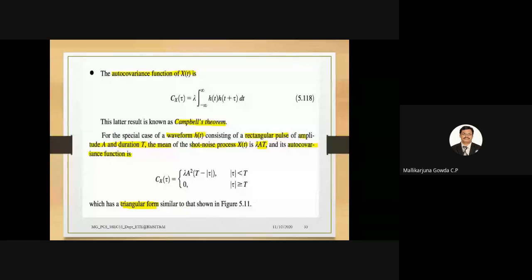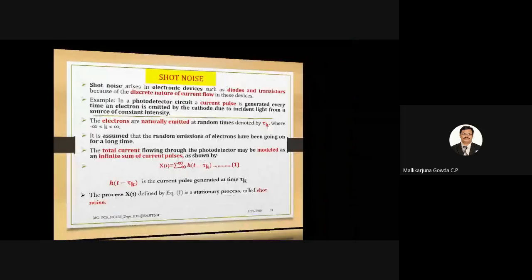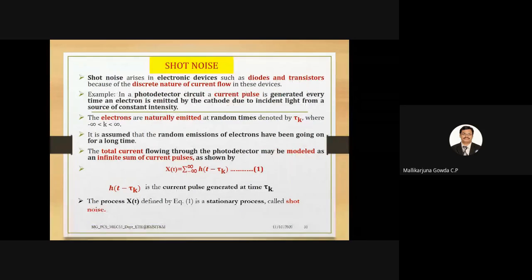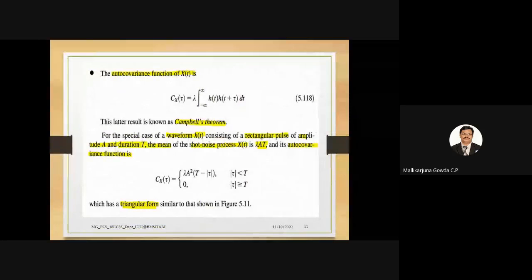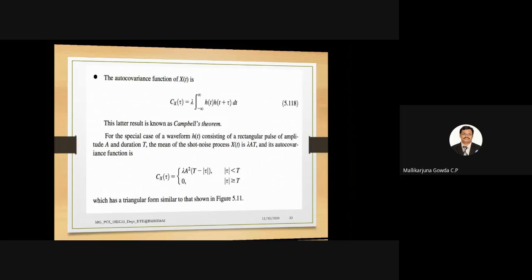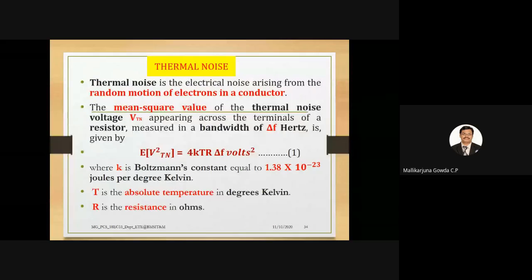If asked a short note on shot noise, you should say: what is shot noise, how it arises, and how to model it. The autocorrelation function of a rectangular pulse gives a triangular form. Next is thermal noise.